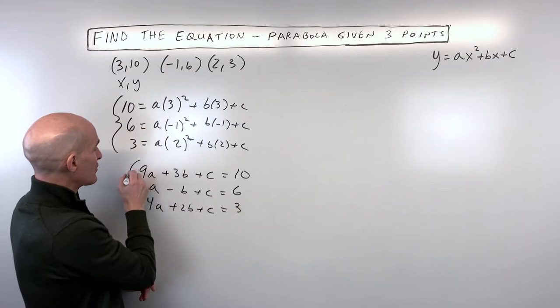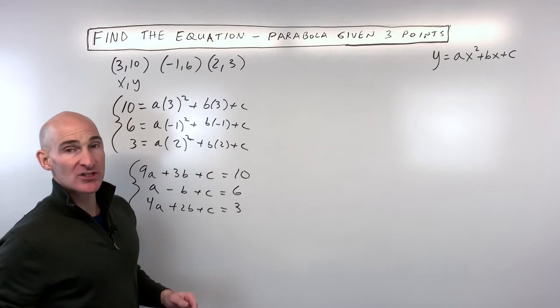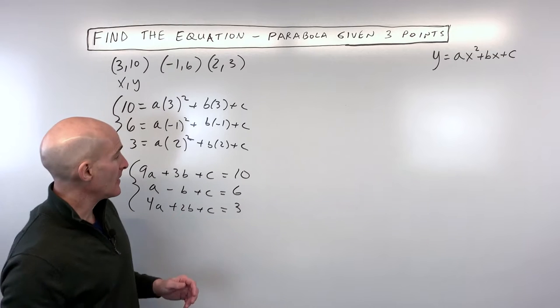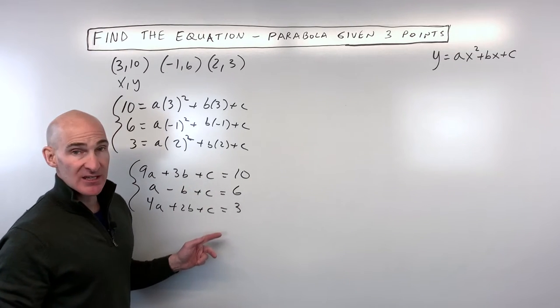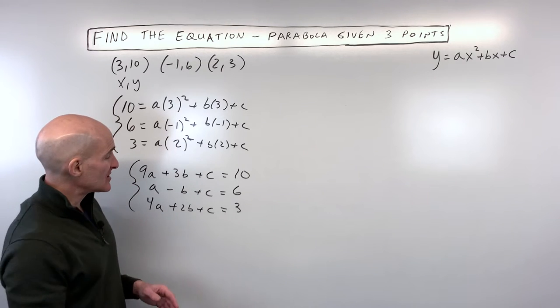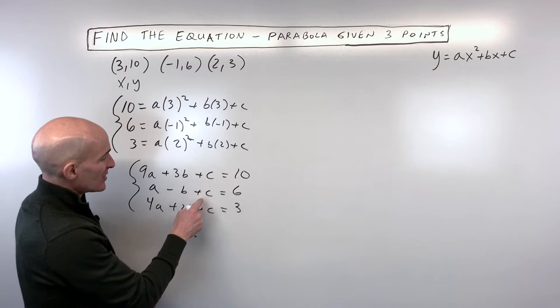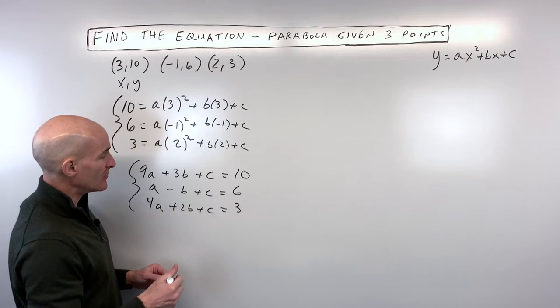Okay, so these are the three variable three equations that we're going to work with to solve for a, b, and c. Now you want to pick a variable to eliminate either the a's, the b's, or the c's. And I'm going to eliminate the c's in this case because there's just 1c. It looks like it's going to be pretty easy to eliminate.